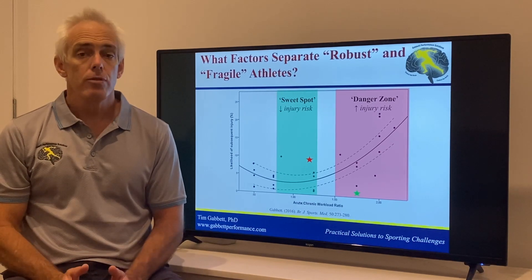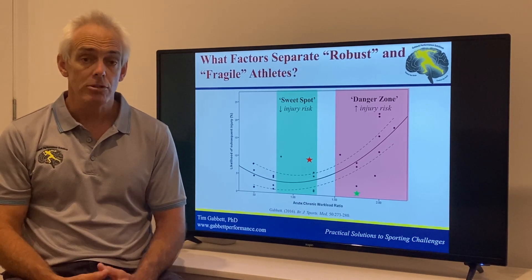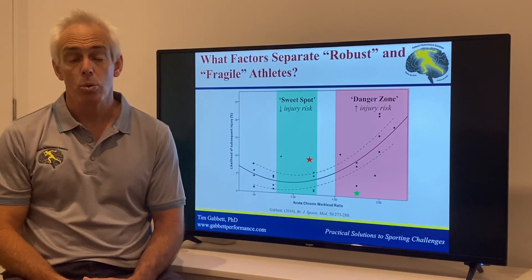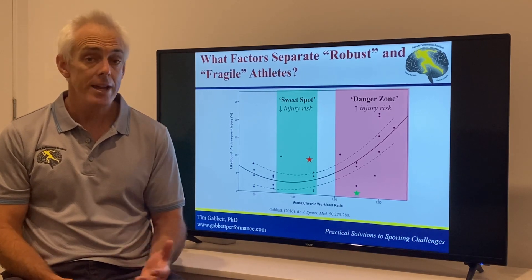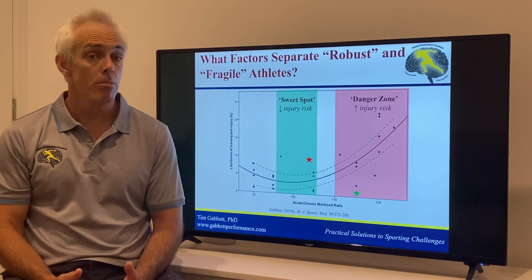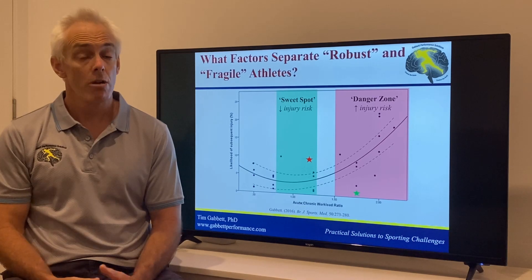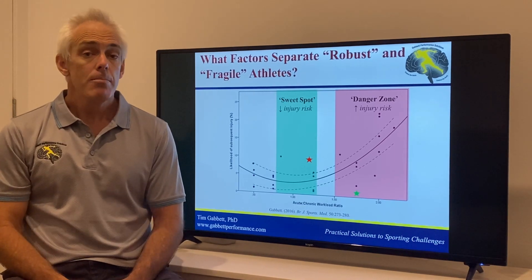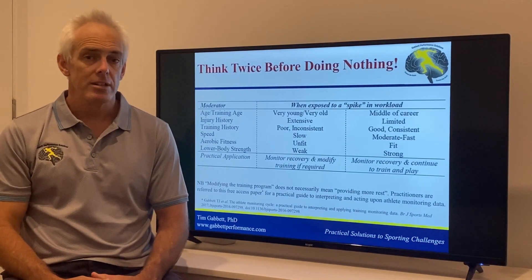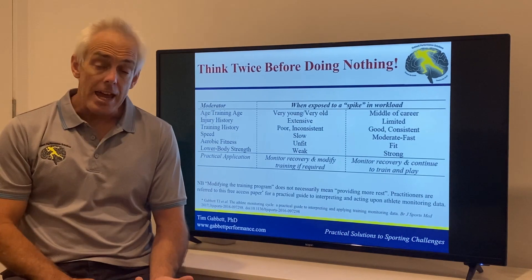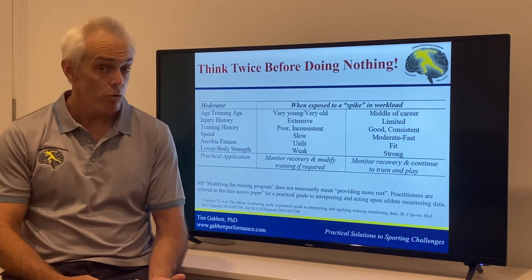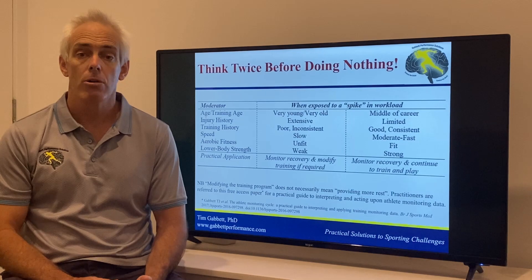There are a lot of moderators that we've uncovered for high-intensity intermittent sports. Moderators are likely very sport-specific — for a weightlifter it might be strength, while for a marathon runner aerobic fitness might be more important. Looking at the next slide, we can see a number of moderators we've identified: age is important, injury history is important, training history or chronic load is important, and strength and aerobic power are important.